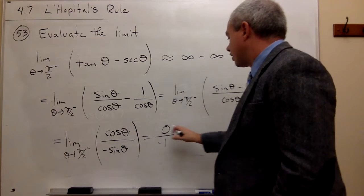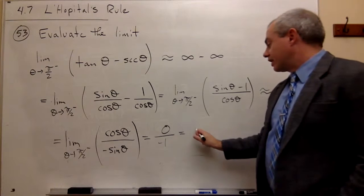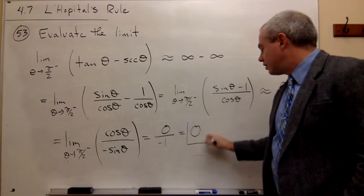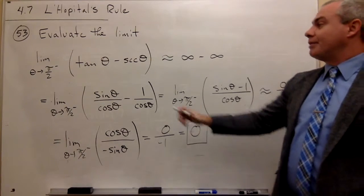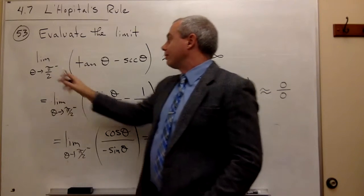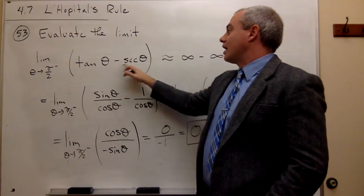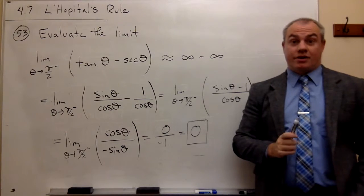So I get 0 divided by negative 1, which we know is 0. And so the limit as theta goes to pi over 2 from the left of tan theta minus secant theta is, in fact, 0.